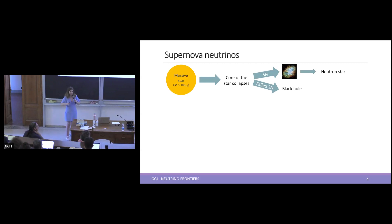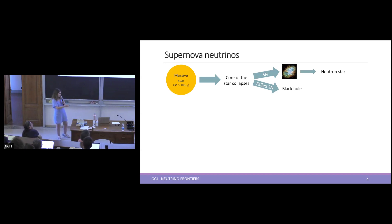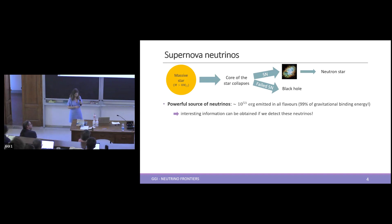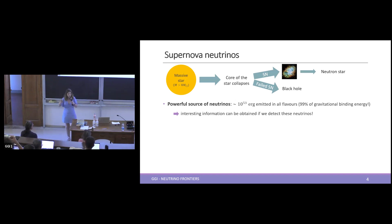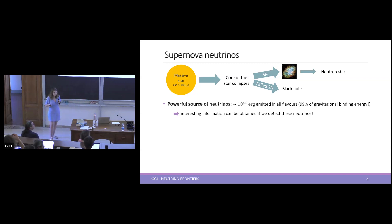When a massive star dies, its core collapses and it can explode in a supernova, ending up forming a neutron star, or the explosion can fail and it re-collapses back into a black hole. During this process, a lot of neutrinos are emitted — 99% of the gravitational binding energy of the star is released as neutrinos. If we detect these neutrinos as they travel to Earth, we can extract interesting information both about the explosion dynamics and about properties of neutrinos, which as a particle physicist is what I care about.